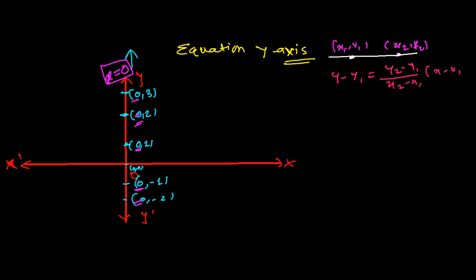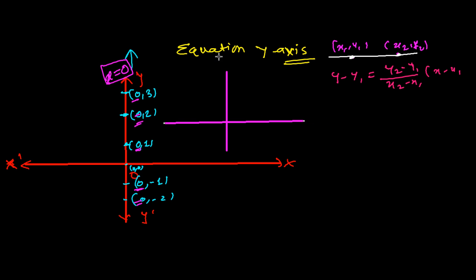Let me draw another figure. This is my x-axis, this is my y-axis. I'm supposing two points on the y-axis: point one with coordinates (0, y1) and point two with coordinates (0, y2). Now let's find the equation of the line passing through these two points using the two-point formula.